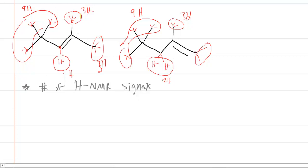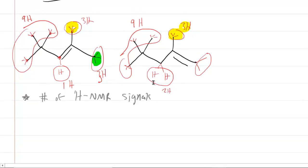This structure, the first structure, would have a pair of signals that represent three hydrogens. So we would get a signal for these three hydrogens and then a different signal for those three hydrogens. Whereas the other structure would only have one signal that corresponds to three hydrogens. So let's see how this can help us distinguish the answer.